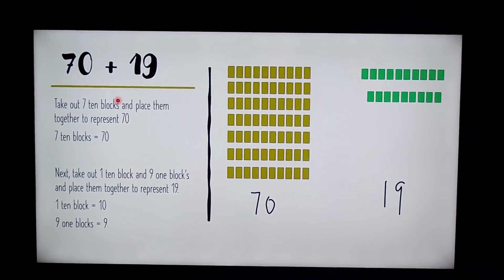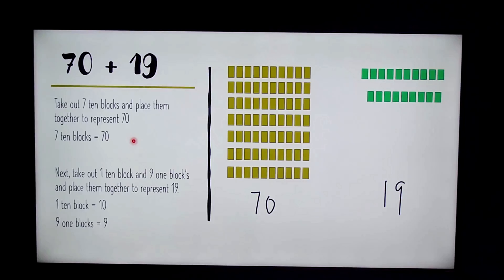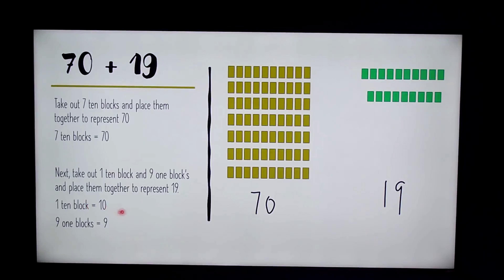The next equation is 70 plus 19. First we take out seven 10-blocks and place them together to represent 70 — seven 10-blocks equals 70. Next we take out one 10-block and nine 1-blocks to represent 19. One 10-block equals 10 and nine 1-blocks equals 9.